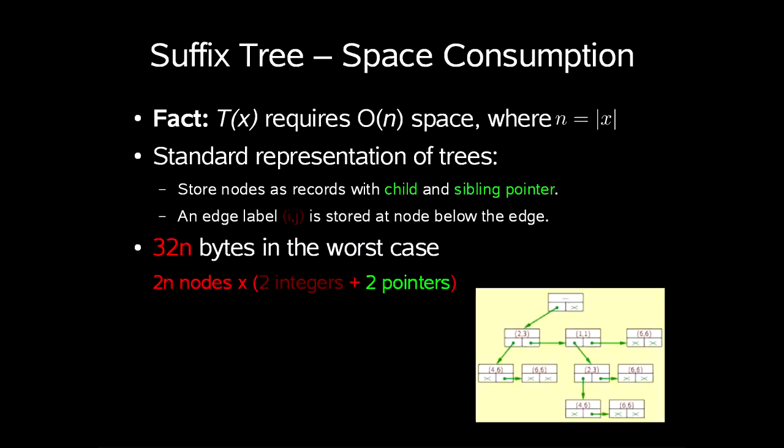But how much space does it consume in practice? Well to realize this we have to know how we represent our suffix tree. The standard approach is to store nodes as records with child and sibling pointers. An edge label i,j is stored at node below the edge. This will give us 32n bytes in the worst case. So 2n times 2 integers plus 2 pointers. I hope you agree with me on this.